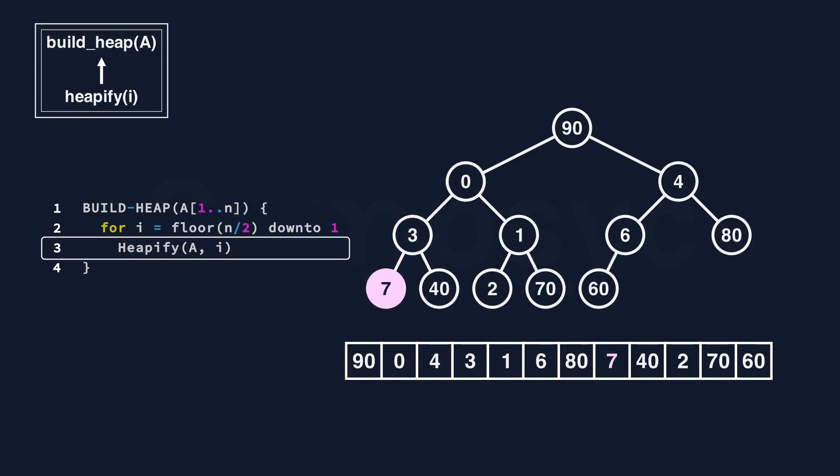Then it's 7. It took two switches to arrive at the right position. The last node to heapify is 90. It took three switches. Okay, build heap completed. After we heapify almost every node, we get a min heap. Check it out.